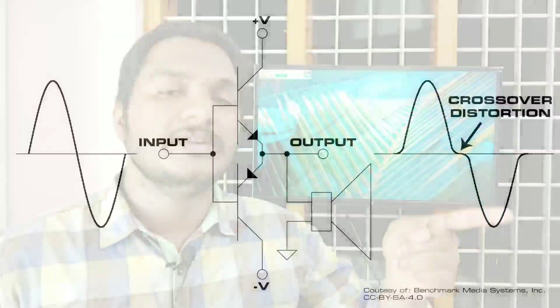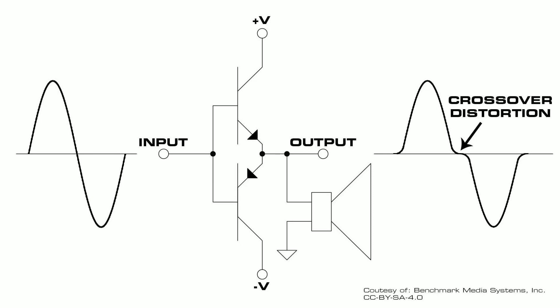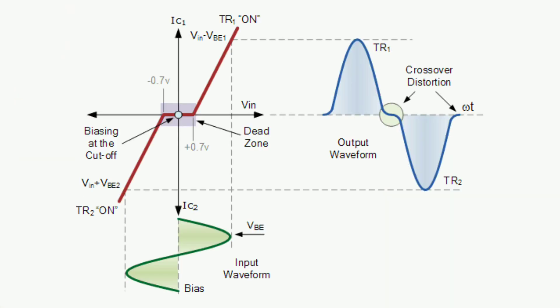But there is a problem here: it is called crossover distortion. At the zero crossing of the wave, there is a crossover. That crossover causes a dead time, and that dead time produces crossover distortion. That is why these amplifiers have a practical problem. However, the efficiency is very high — Class A is only 20-30% efficient, while Class B is about 80% efficient, but it is not usable due to the distortion.